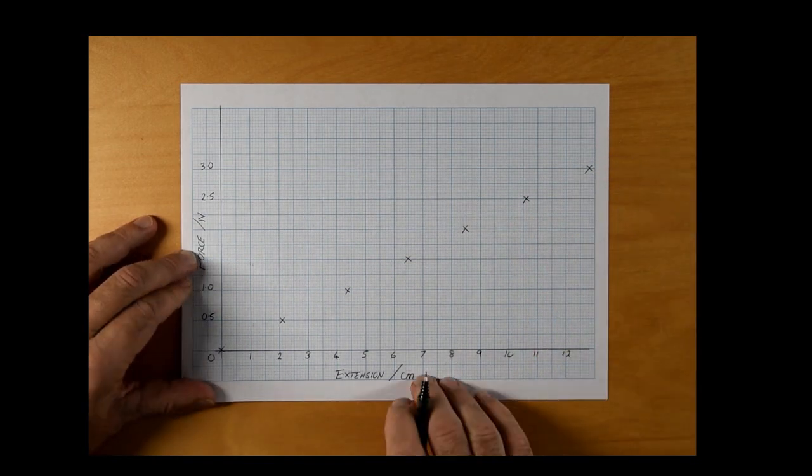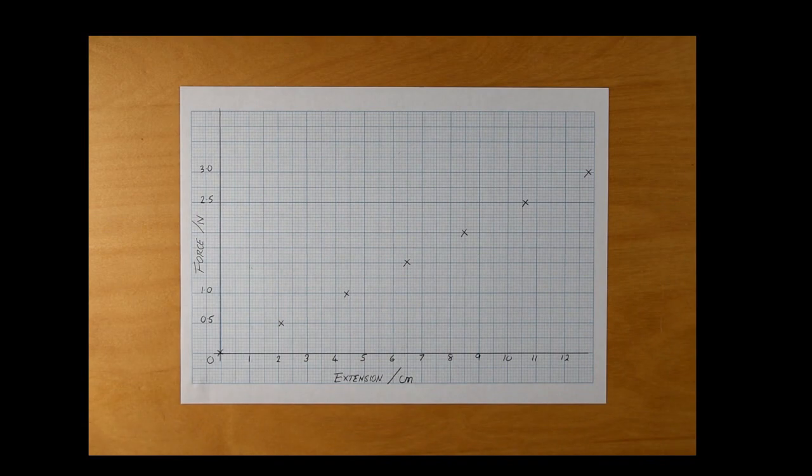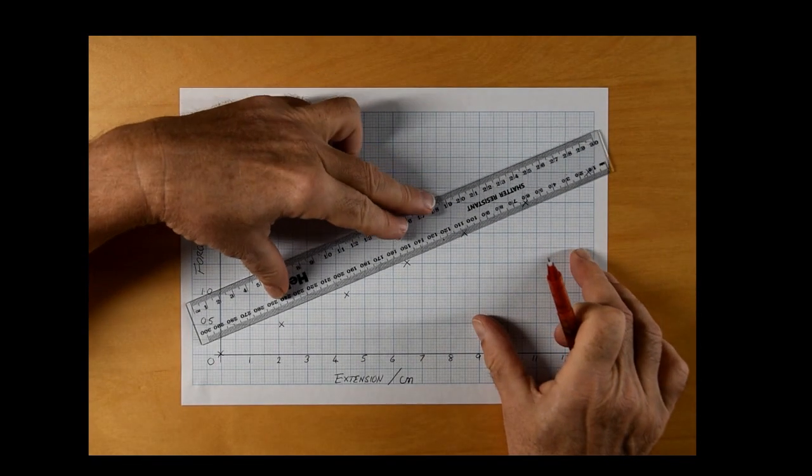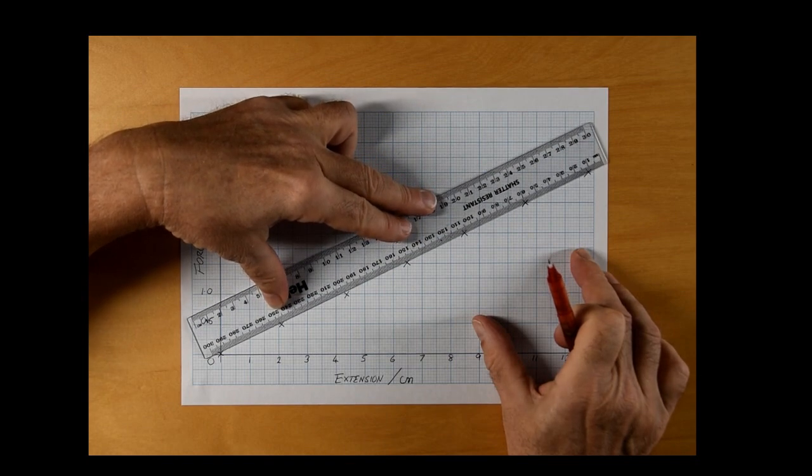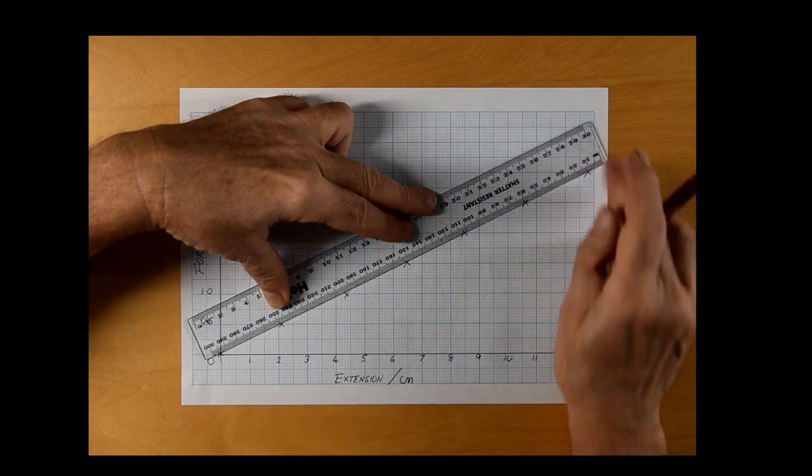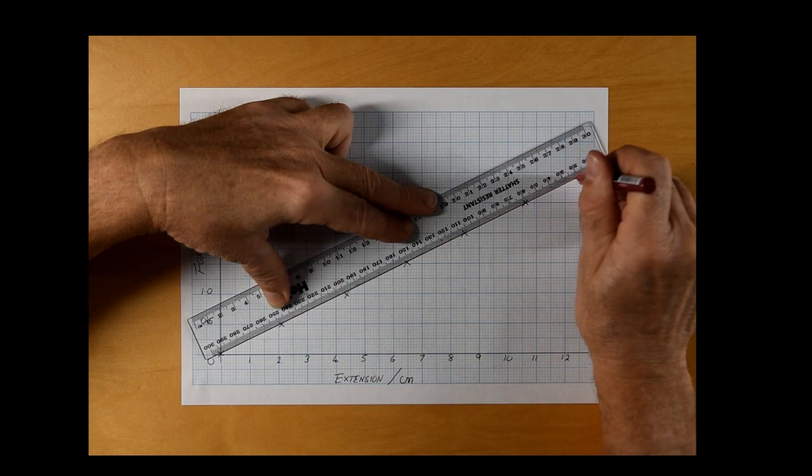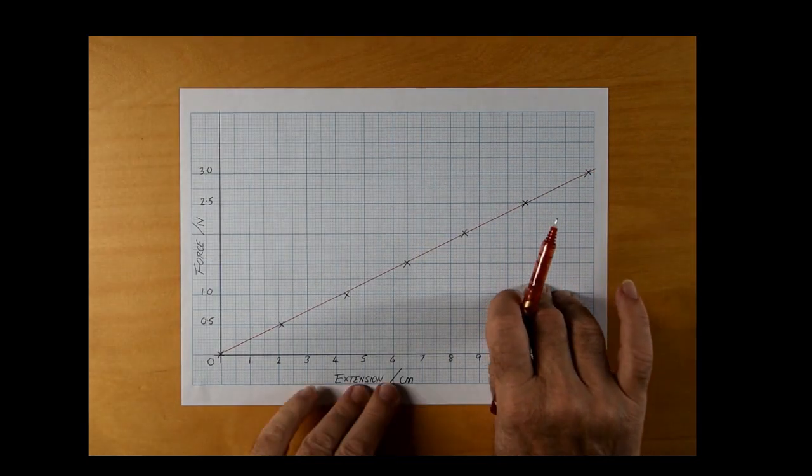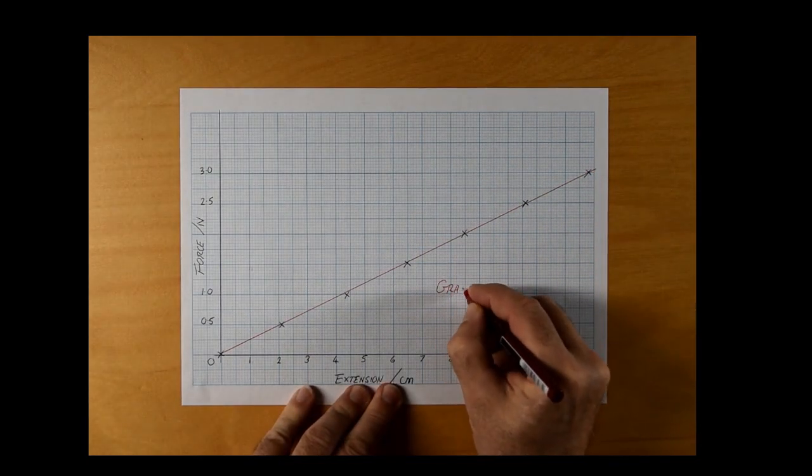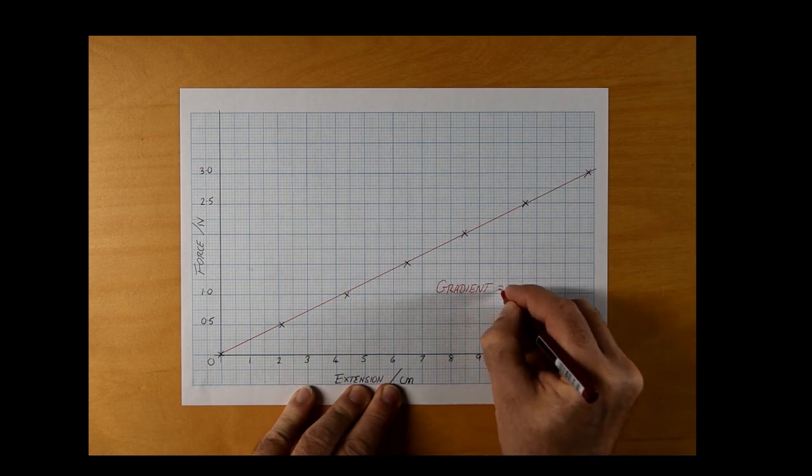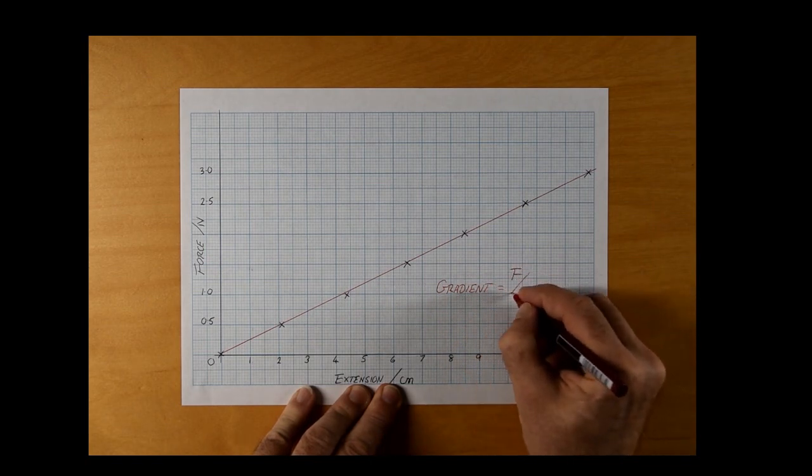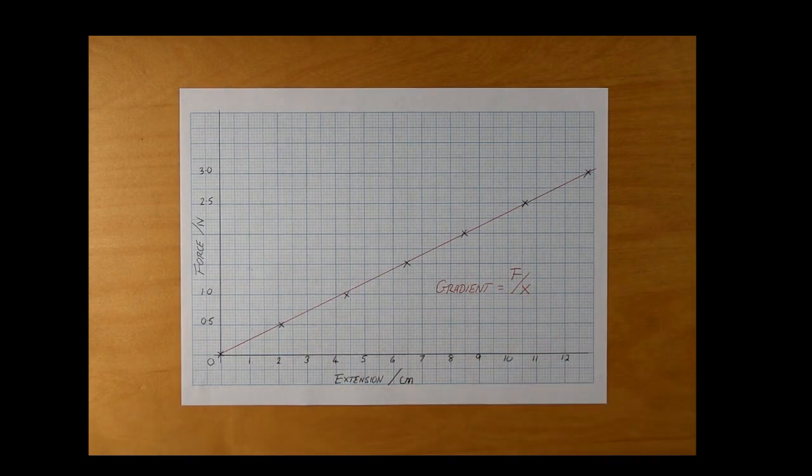The plots clearly produce a straight line. A line of best fit should be drawn with a ruler going through 0, 0. The gradient of this line will be force over extension, or f over x. The gradient is constant for any particular spring, and this is called the spring constant, k.